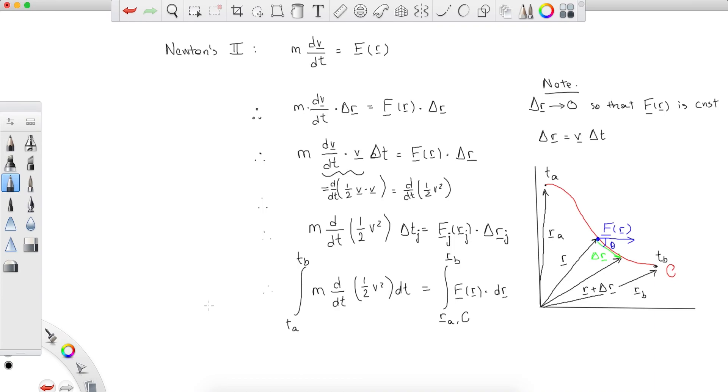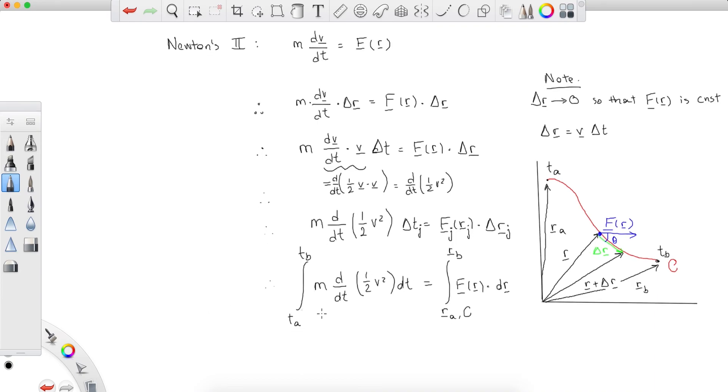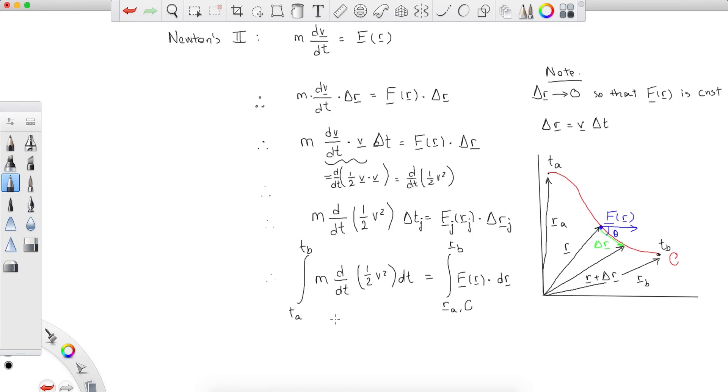So how does this simplify? So this part we have already simplified in our earlier derivation in one dimension. This is just 1/2 m vb squared minus 1/2 m va squared. And this is equal to the integral along the path C of F times r. And this is the work energy theorem in the higher dimensions.